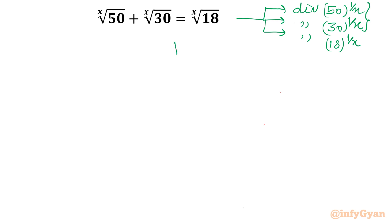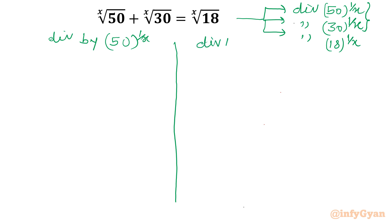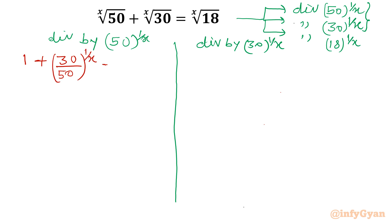Here I am dividing by x-th root of 50. Once I divide, I write 1 on the left. The second term becomes 30 over 50 whole power 1 over x, equal to 18 over 50 whole power 1 over x. Now come to dividing by 30 power 1 over x: I will write 50 over 30 whole power 1 over x.